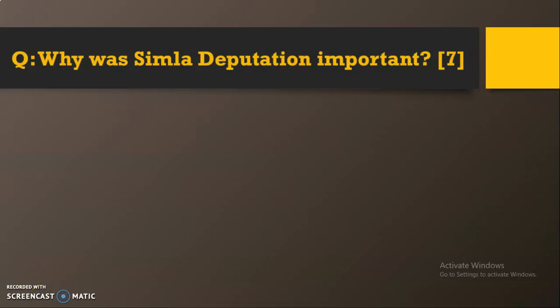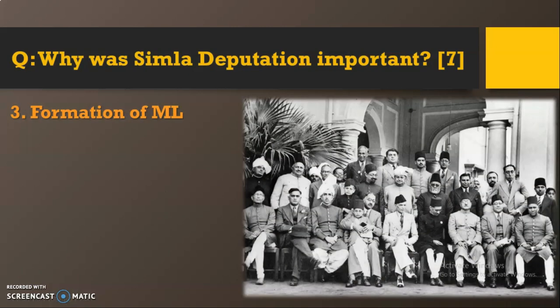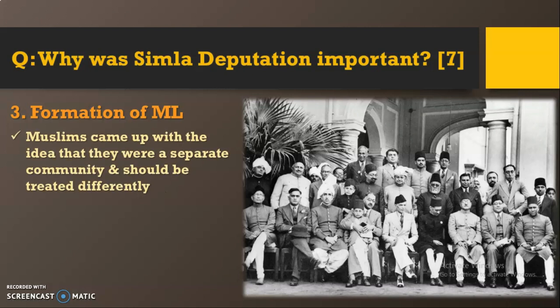Moving to the third and last paragraph on the importance of the Shimla Deputation: the formation of the Muslim League. Muslims came up with the idea that they were a separate community and should be treated differently. The Indian National Congress claimed to represent all communities in the subcontinent regardless of religion, but in reality they were putting forward only the views of Hindus in front of the British.